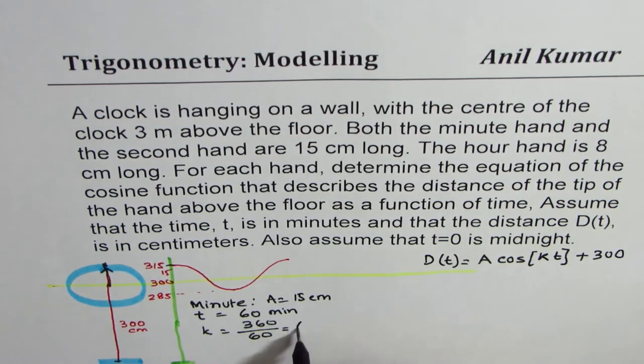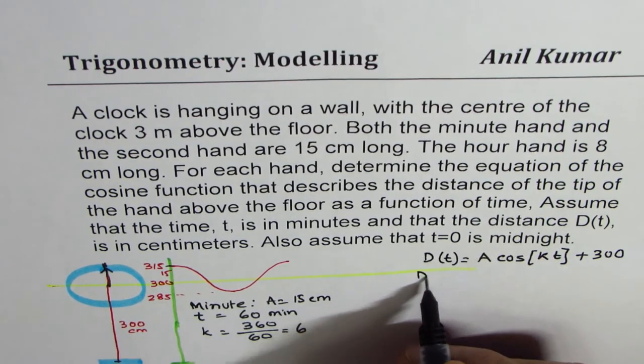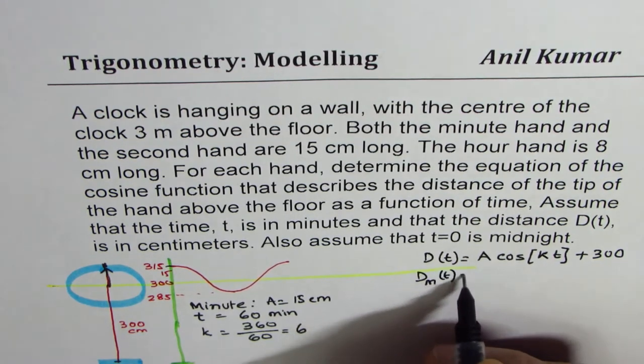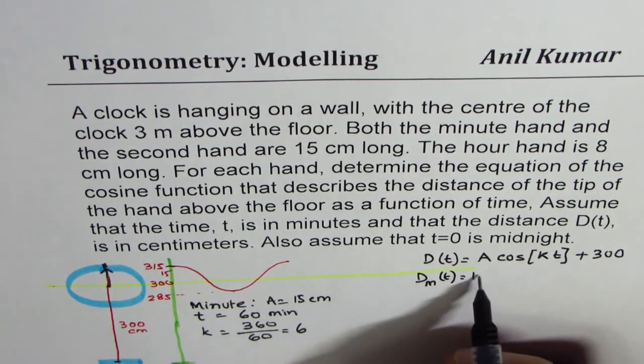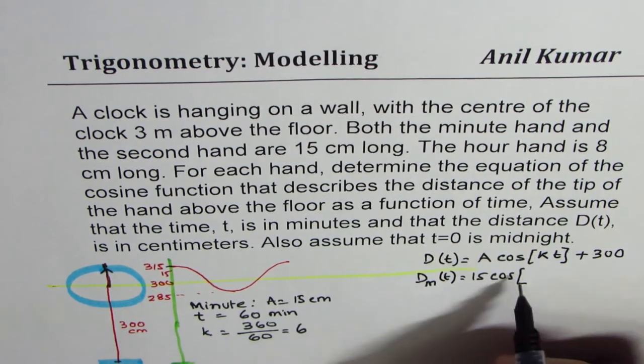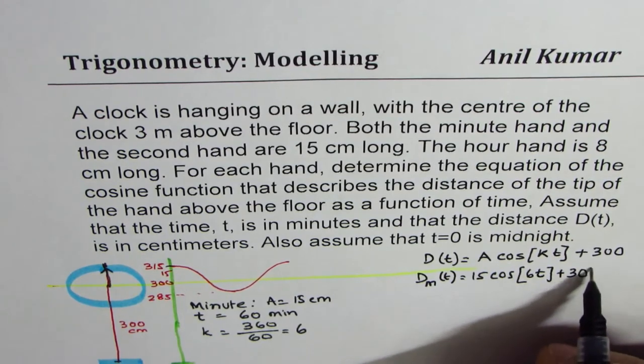So that becomes the k value, which is 6. So for the minute hand, we can write this equation for minute hand will be A is 15 cos of 6t plus 300.